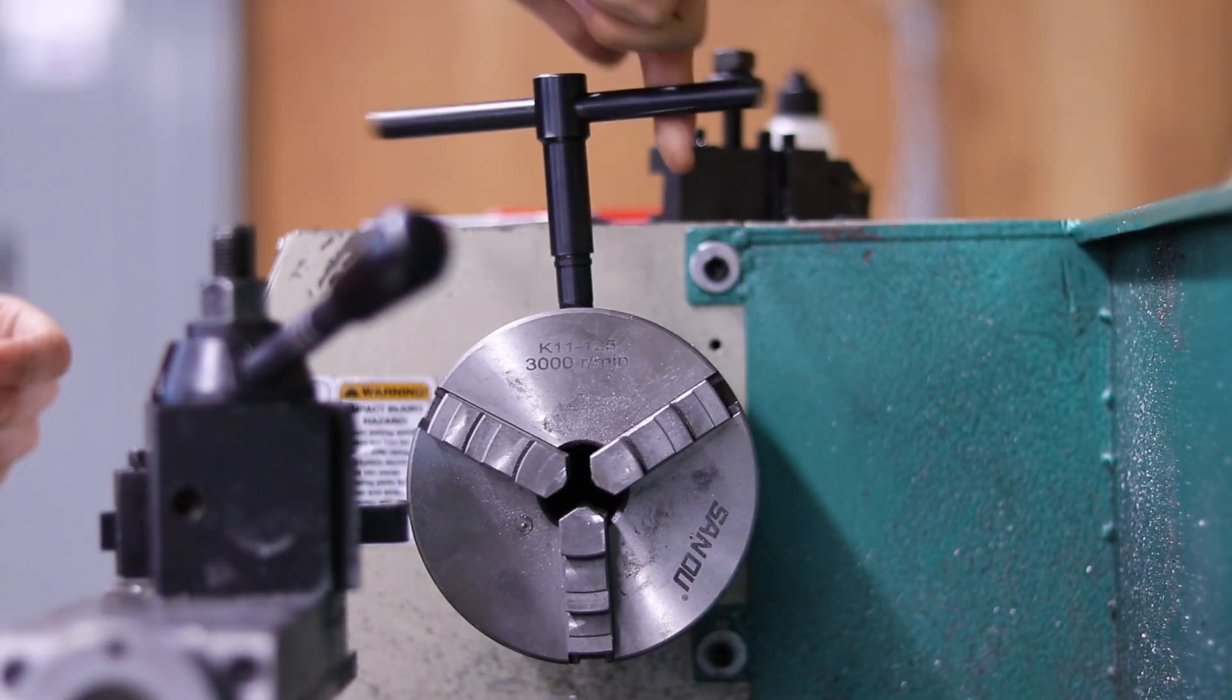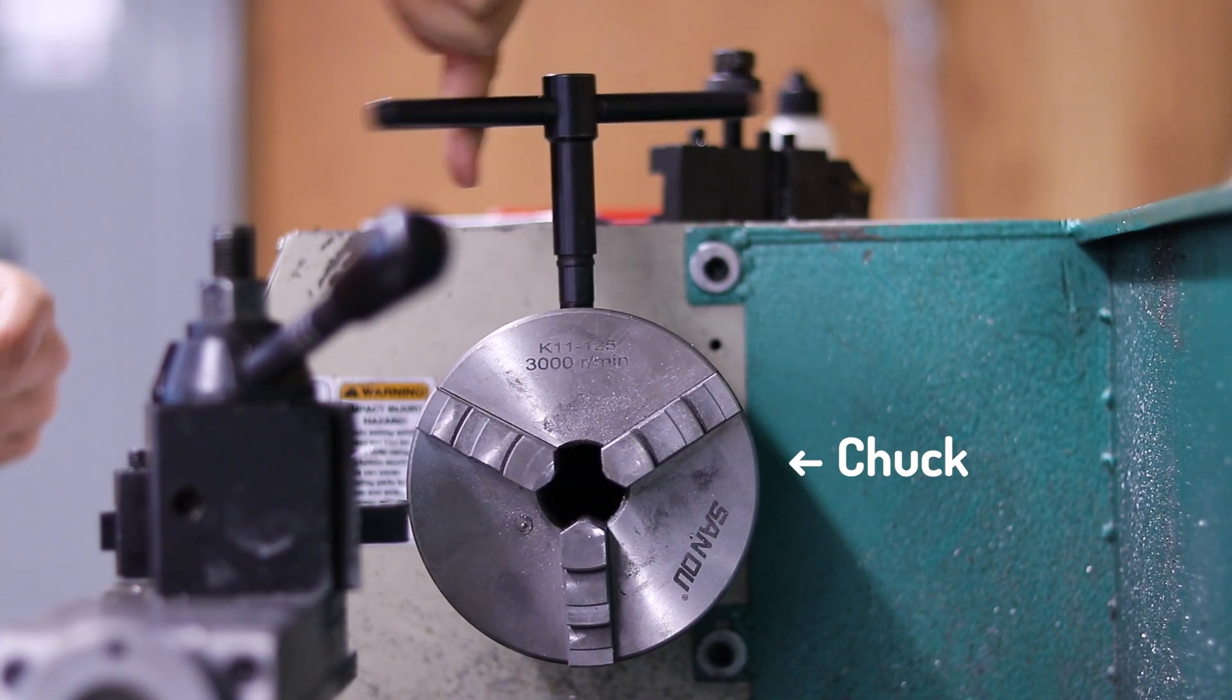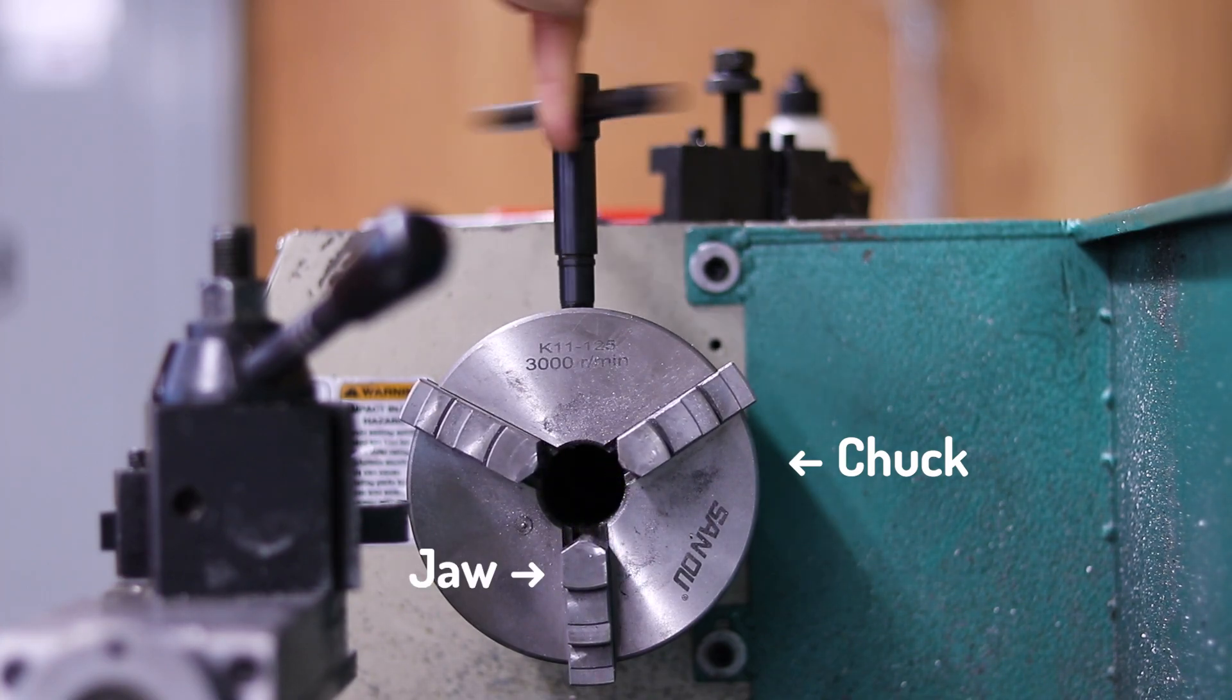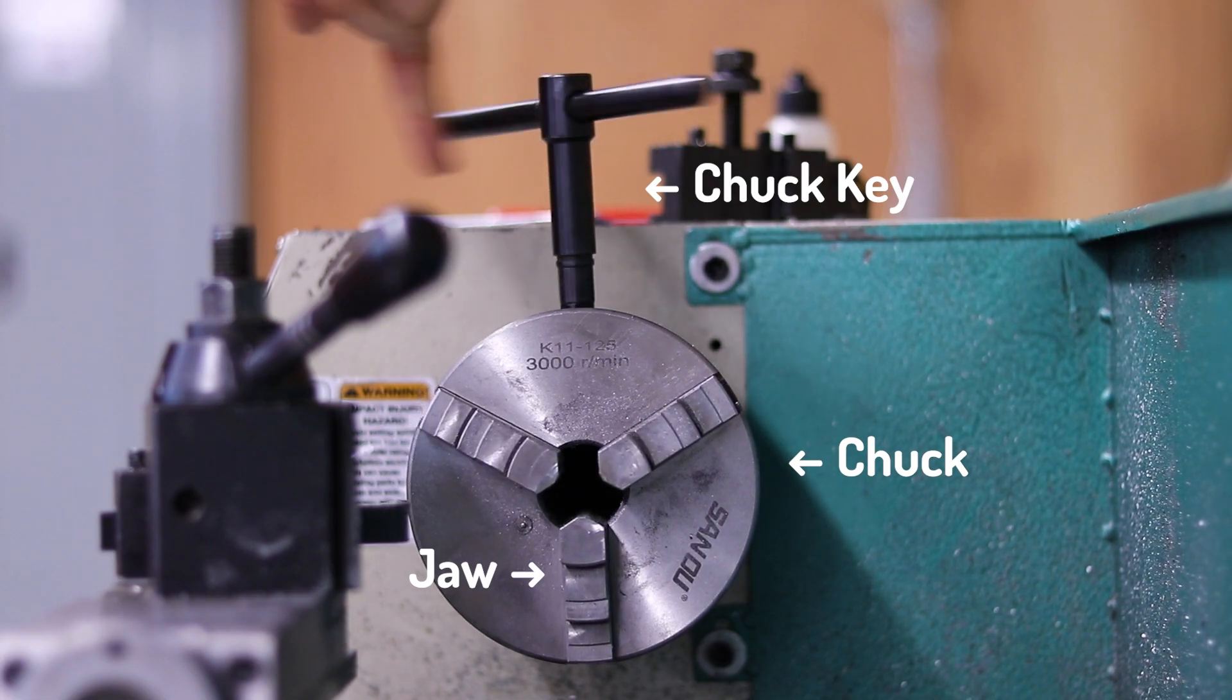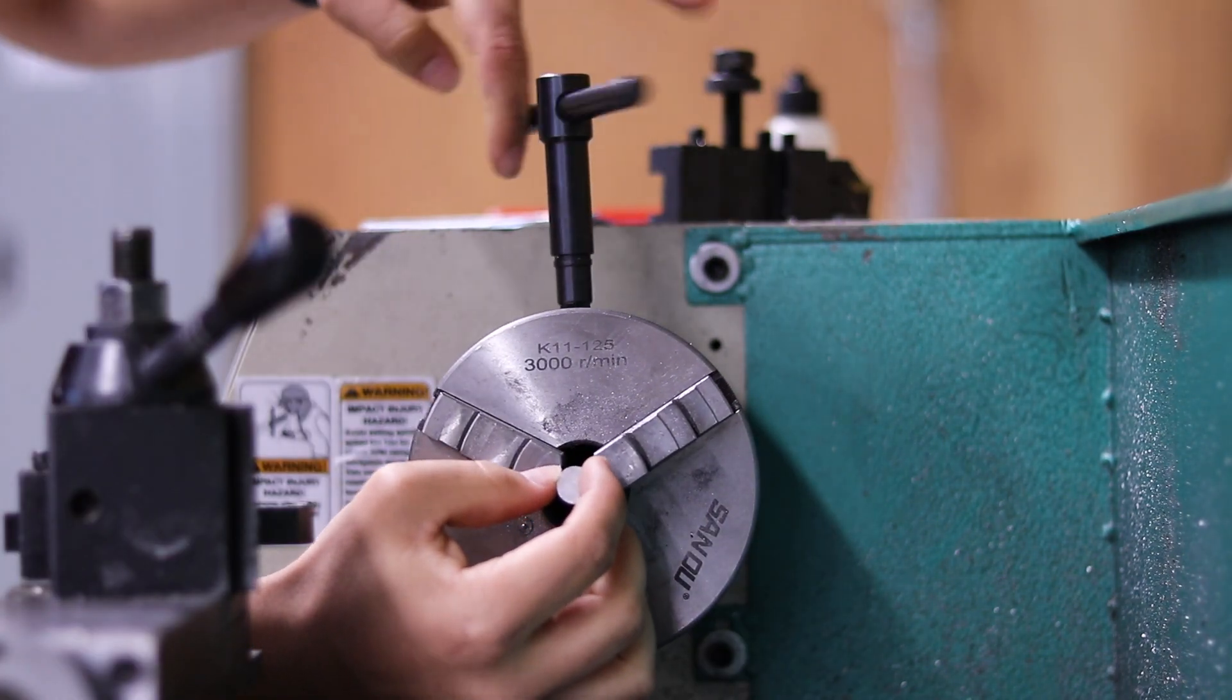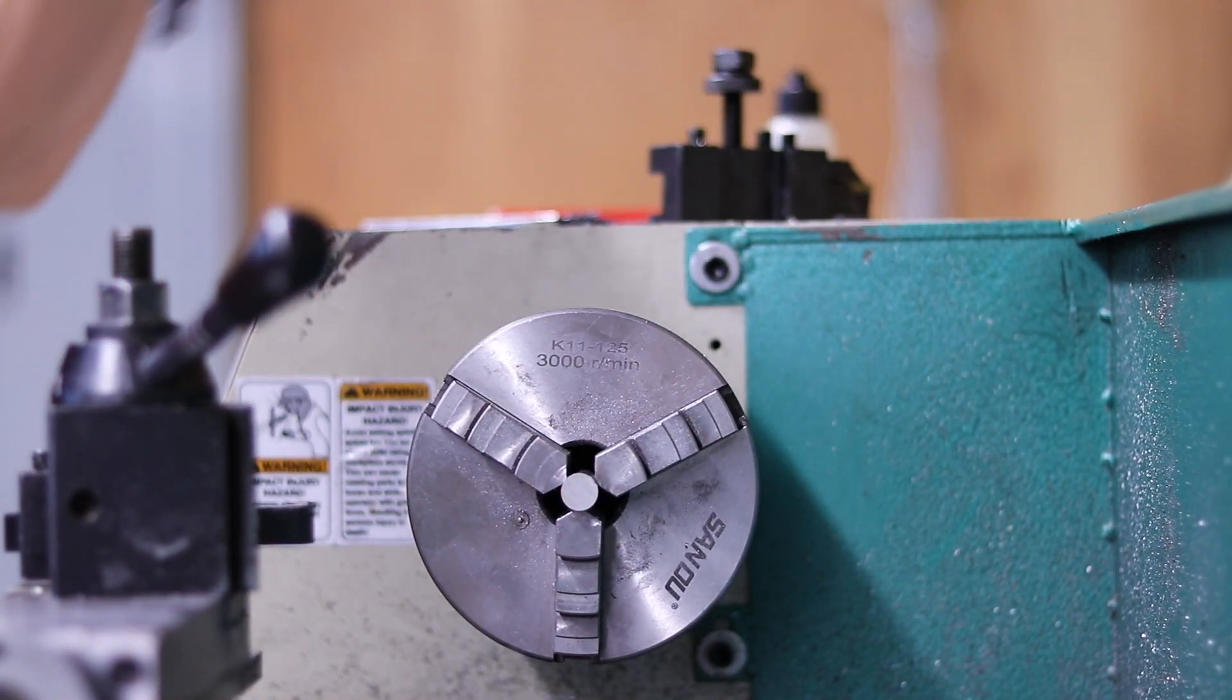At the lathe, we'll mount our part in the chuck. The chuck on a lathe is the same concept as a chuck in a drill. Three jaws lower and hold onto the round part. A lathe chuck is open or closed with a chuck key. With one hand, we'll put our standoff in the center of the chuck, and with the other hand, we'll screw down on the chuck.